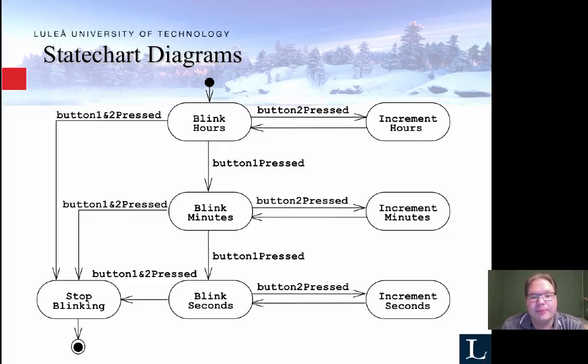So here you can see if you want to increment hours, you press button two. So basically, actually, there should be a line on the vertical lines, you should press button one in the first instance. You go from, if you press button one, you go from blink hours to blink minutes. And then again, you can increment minutes or you can press button one and two to stop blink and commit the time, etc. You can do the same with seconds.